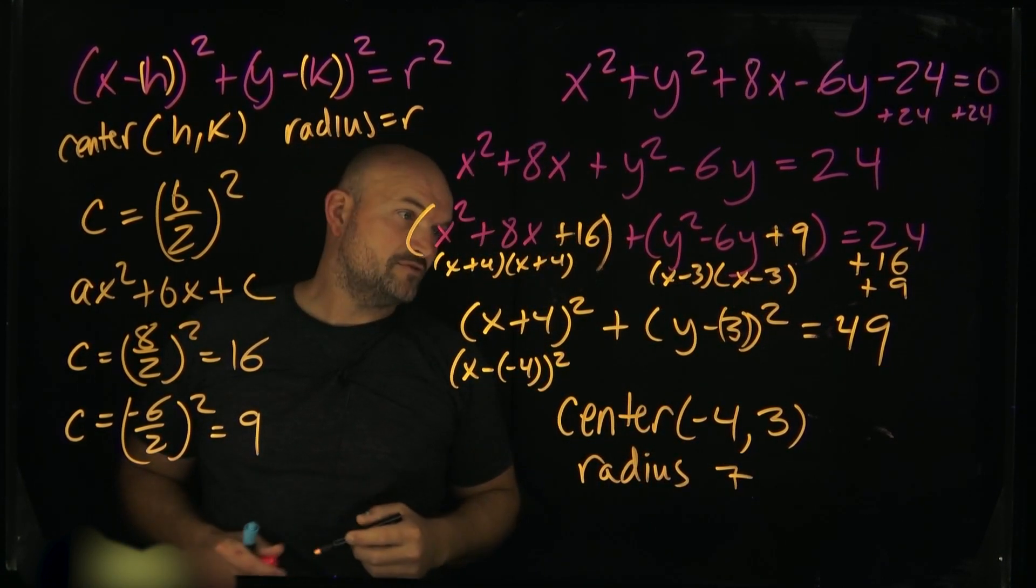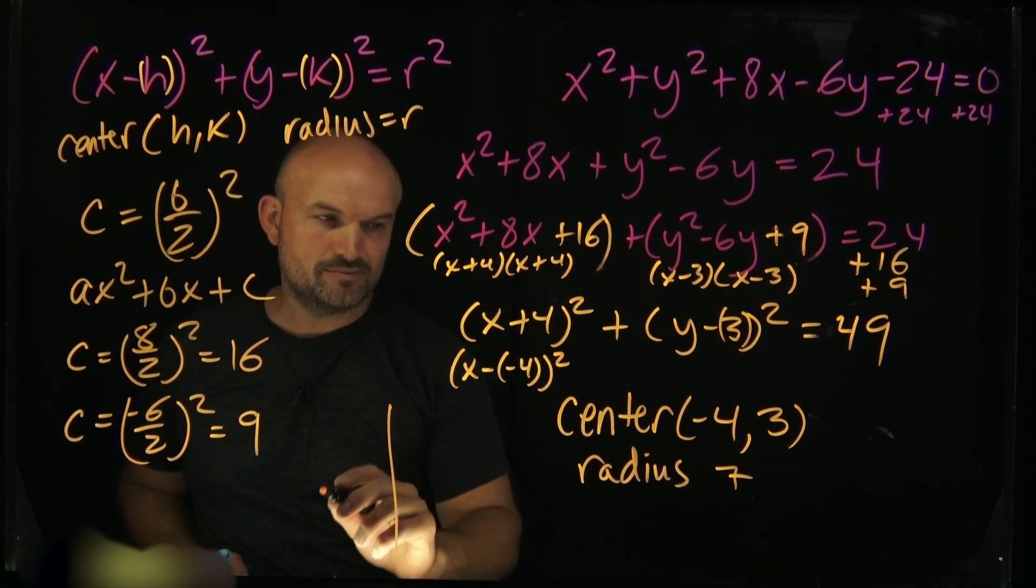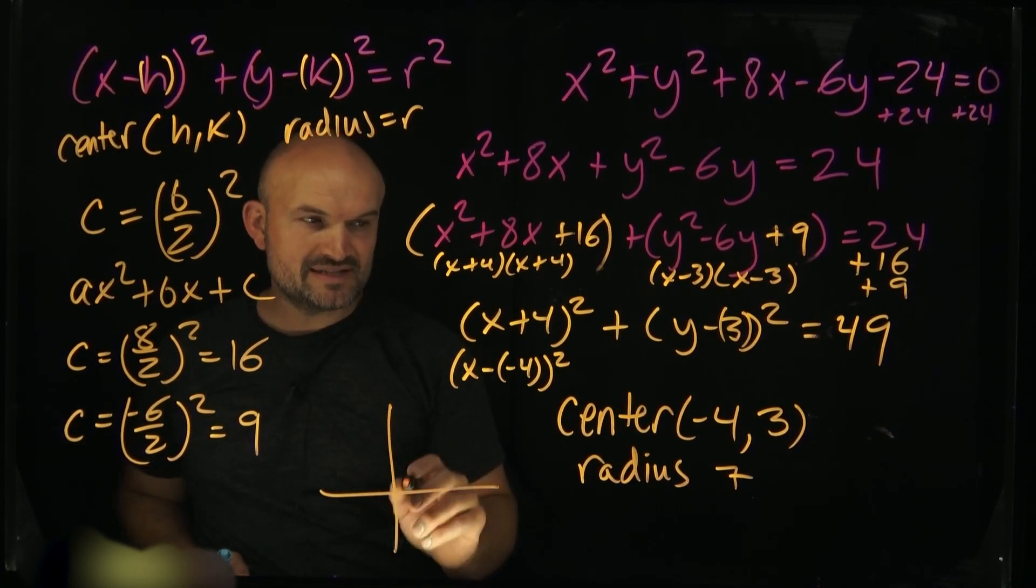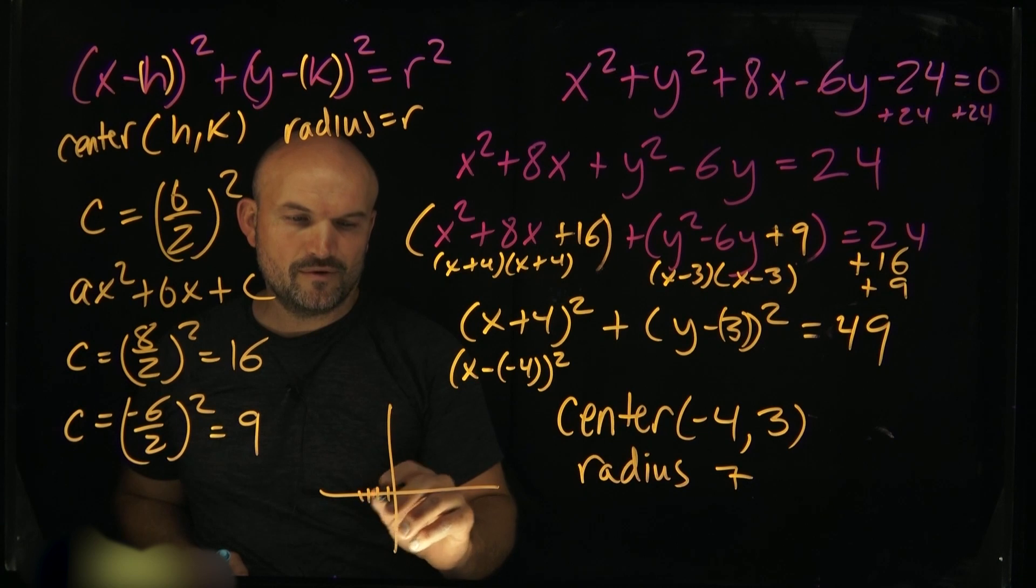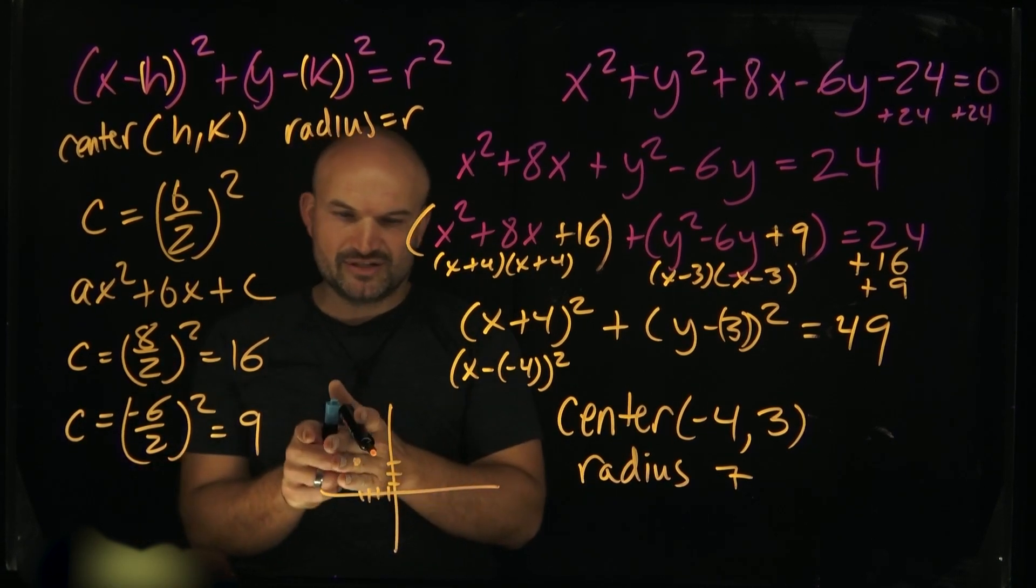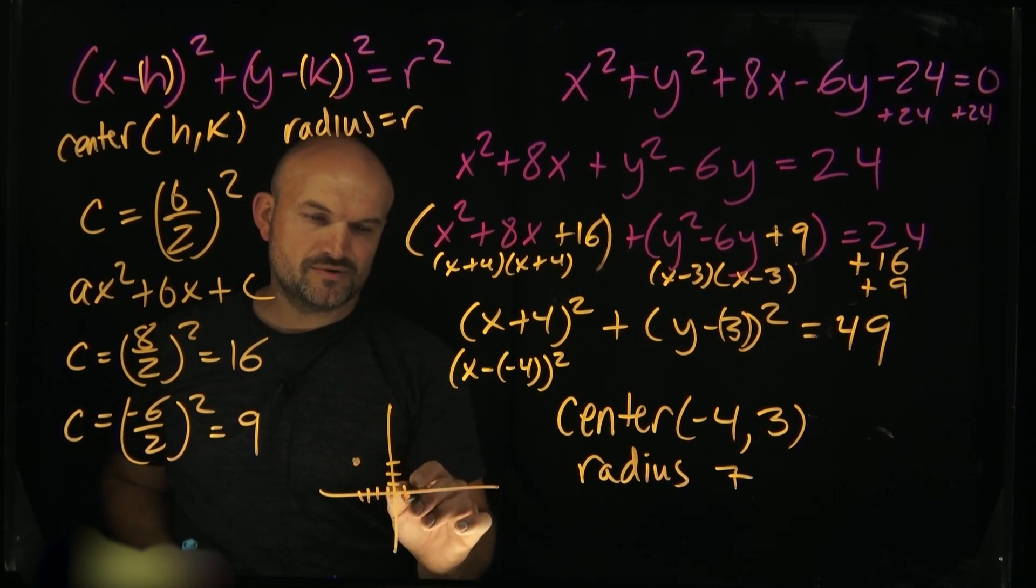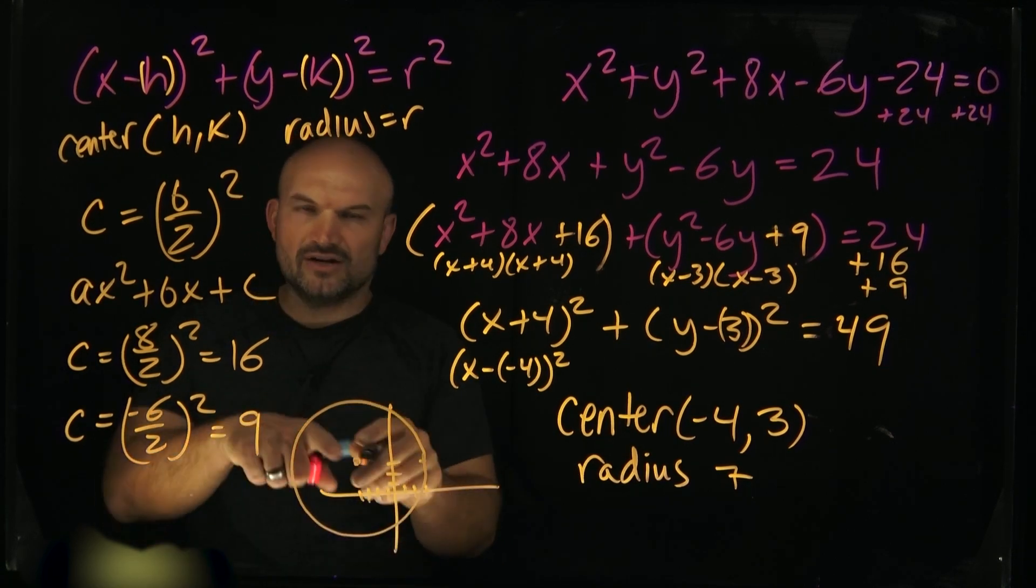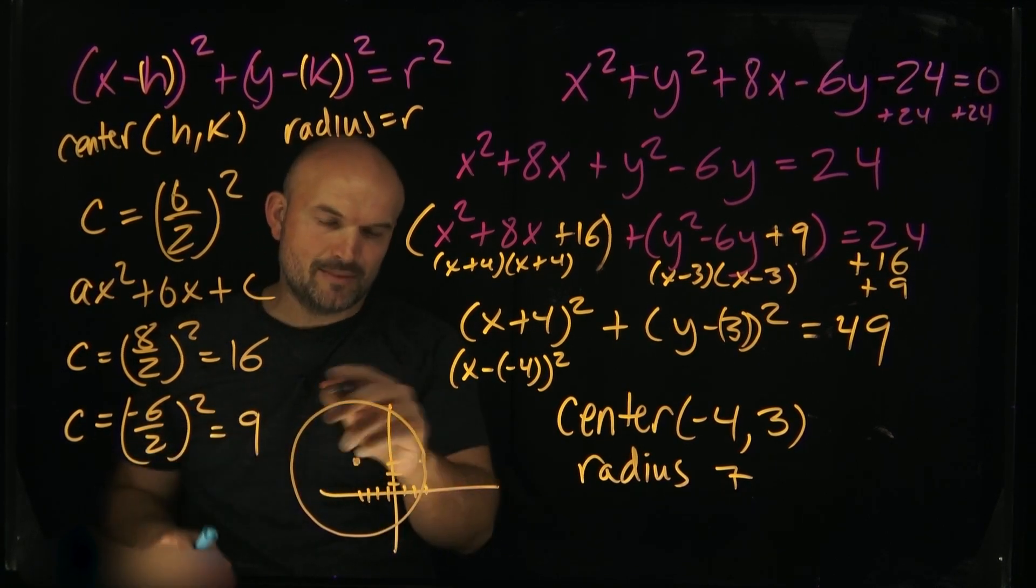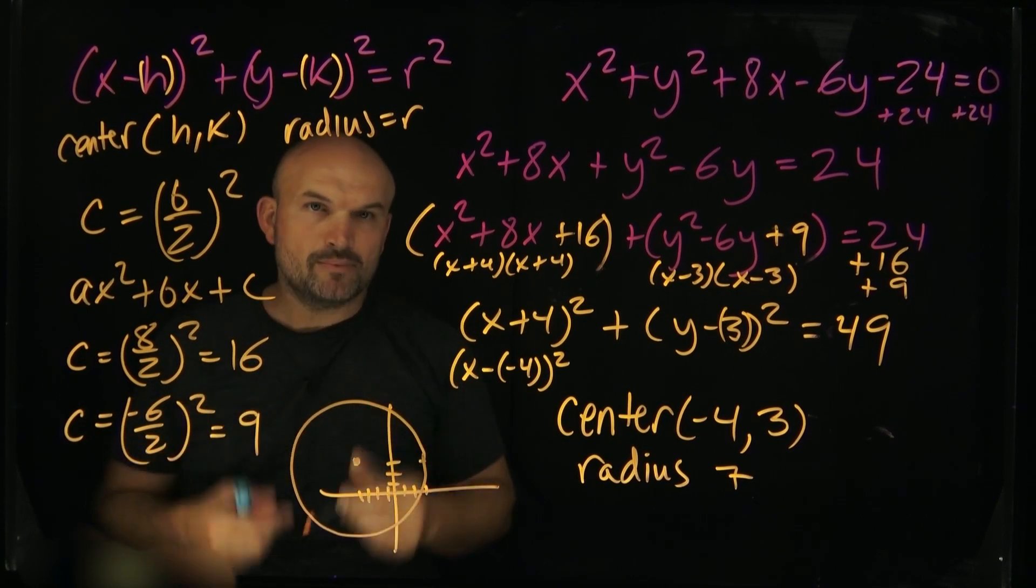I didn't really leave myself enough room, but if we wanted to graph this, we can still probably do this. I'm going to have a center at negative 4, 3. So 1, 2, 3, 4, 1, 2, 3. All right, so we're right there. Then all we simply need to do is just go over 7 units and draw a nice little circle. So I already went 4, so let's do 3 more to the right. And you can also divvy up some different points here from there, left and right, up or down, however you want to.